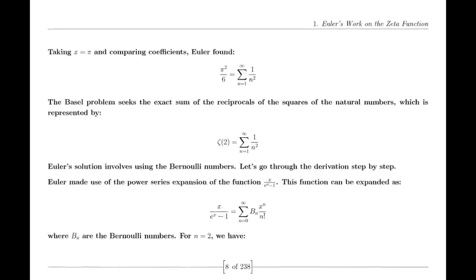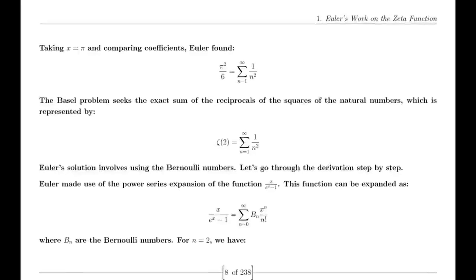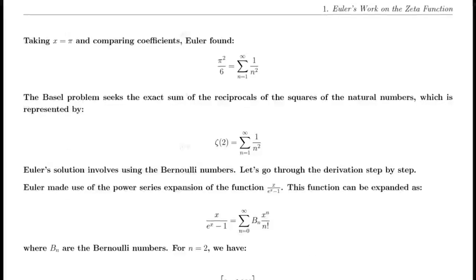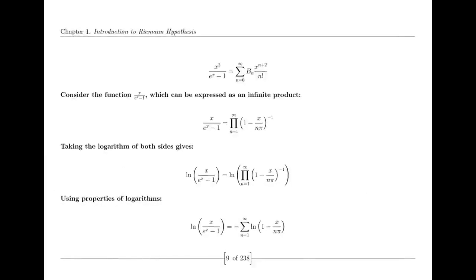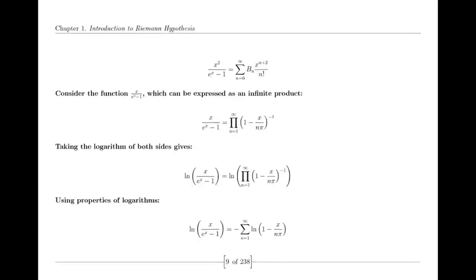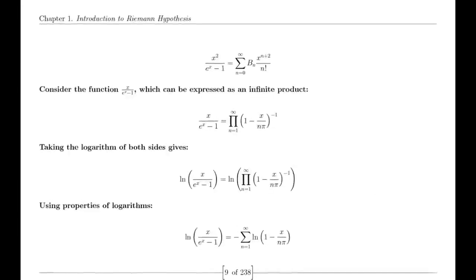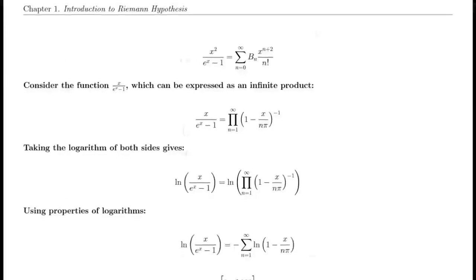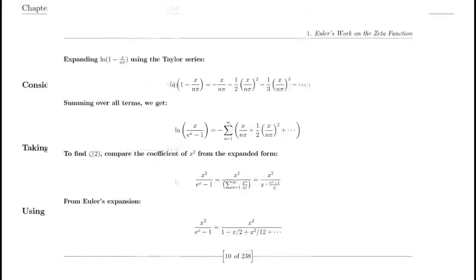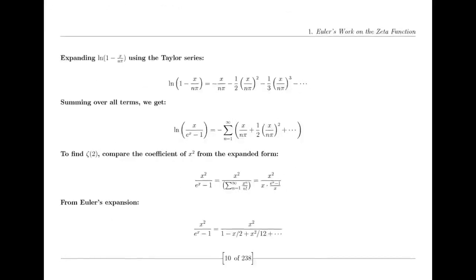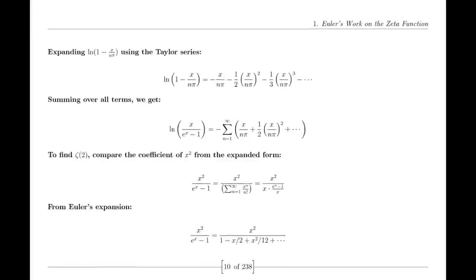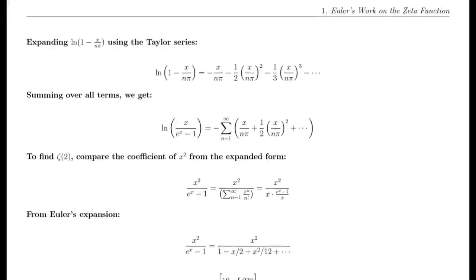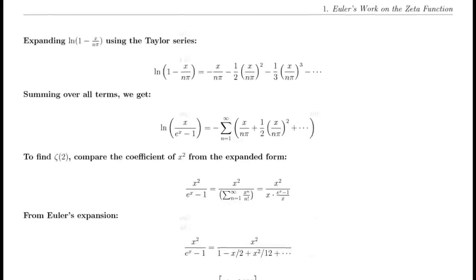The functional equation of the zeta function relates its values at s and 1 − s through a complex expression involving π, the gamma function, and trigonometric functions. This equation is a key result in the theory of the zeta function, showcasing its symmetry and the deep relationships between different mathematical concepts.